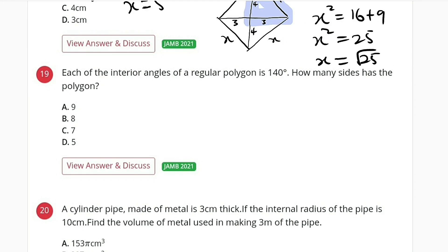Question 19. Each of the interior angles of a regular polygon is 140 degrees. A regular polygon is that type of polygon in which all the interior angles are equal.